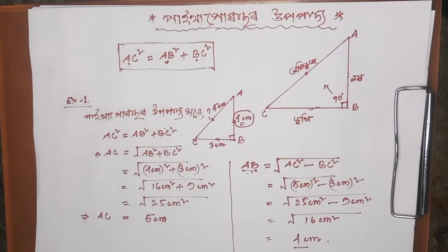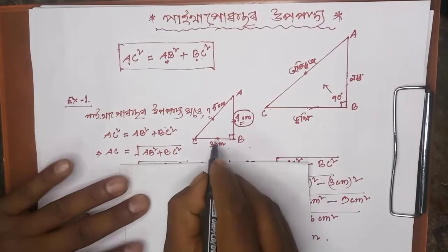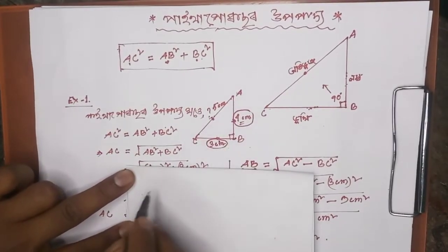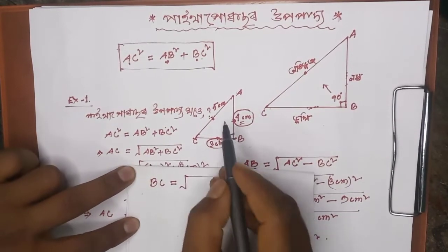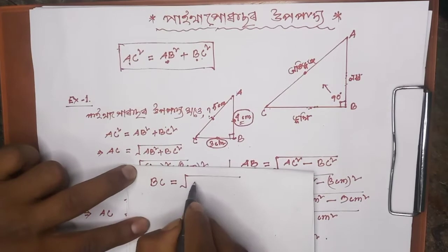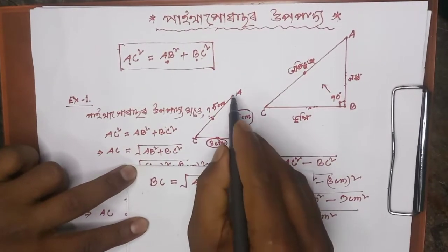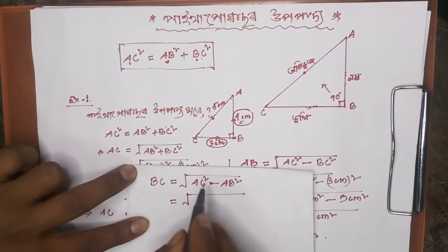Now let's look at BC. Here I feel that BC isn't enough. BC is equal to the square root of AC squared minus AB squared. Using the formula: AC squared minus BC squared. A squared is equal to AB squared. We can see that A squared is equal to C squared. This is the square root.